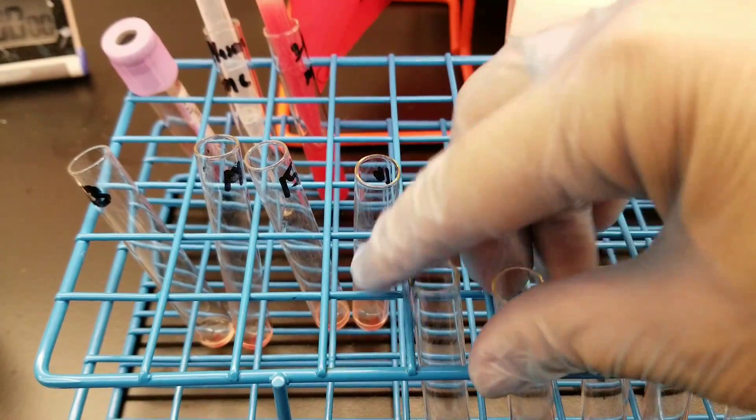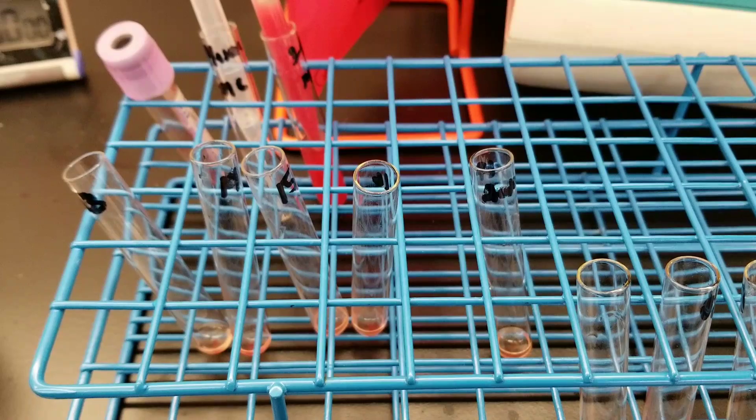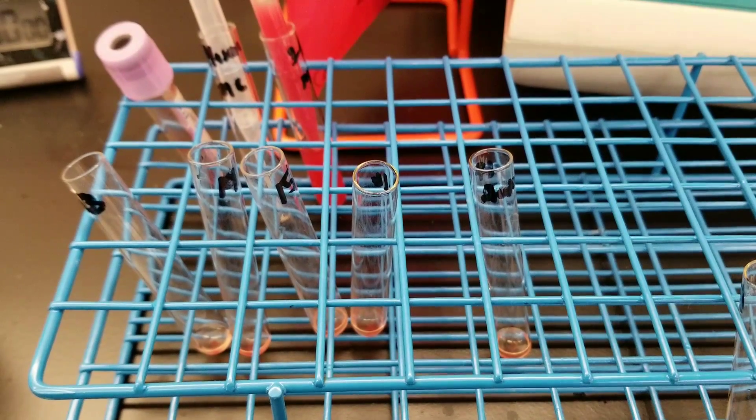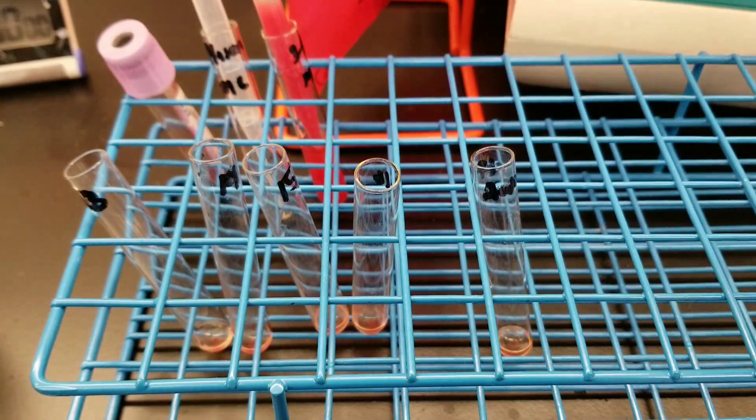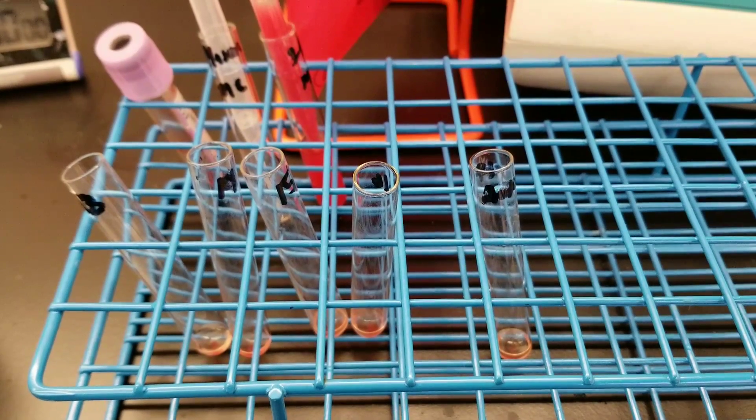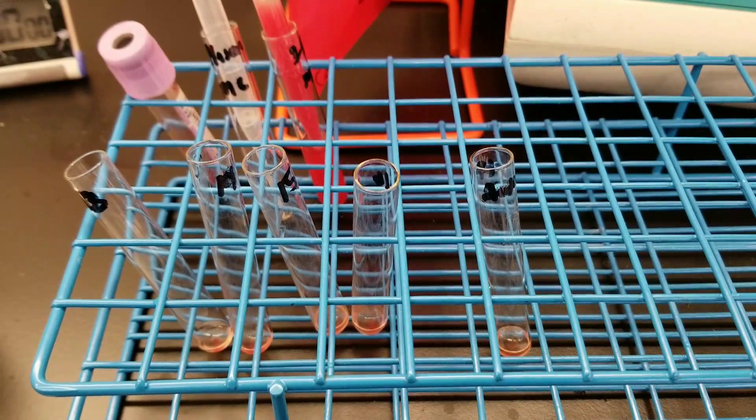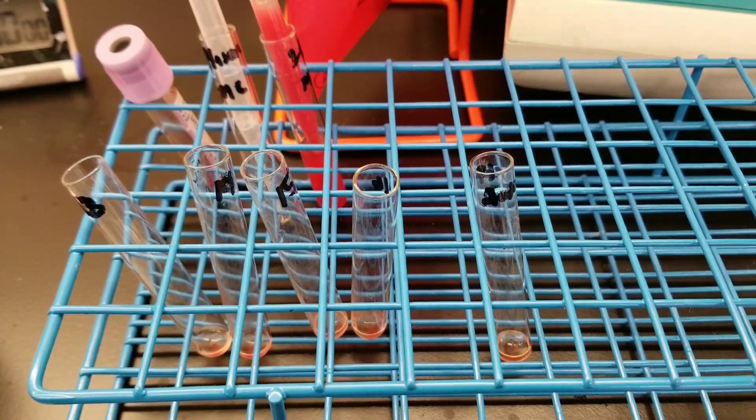I'm going to load them back into the centrifuge and spin them again, and that will be our AHG phase. Then we'll almost be done because then all we'll have to do is add the check cells to the negative cells. I'll see you in a minute.